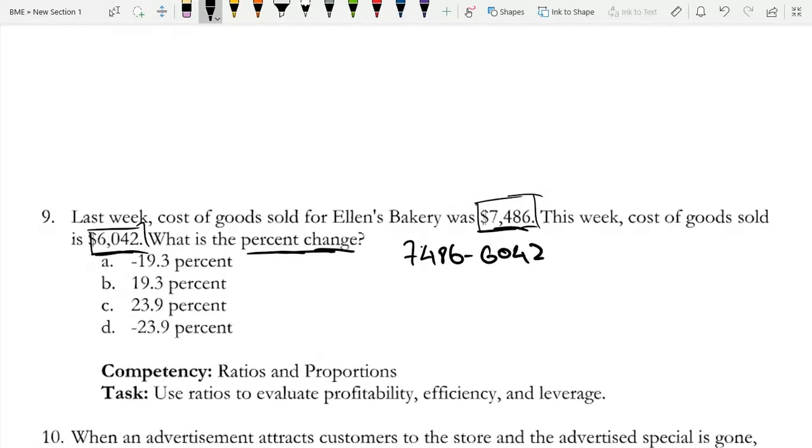And that is, let me just whip out my calculator real quick. So $7,486 minus $6,042.